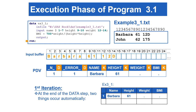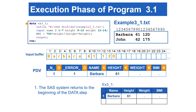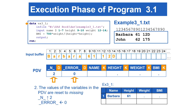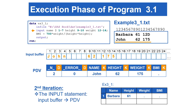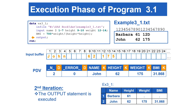Now the control reaches the end of the Datastep, and two things happen automatically. First, SAS returns to the beginning of the Datastep to begin the next iteration. Second, the values of the variables in the PDV are set to missing. The automatic variable _N_ is incremented to 2 and _ERROR_ is set to 0. During the second iteration, the second data line is read into the input buffer. The input statement correctly copies the contents from the input buffer to the PDV. BMI is correctly calculated. The output statement copies the contents from the PDV to the output dataset.